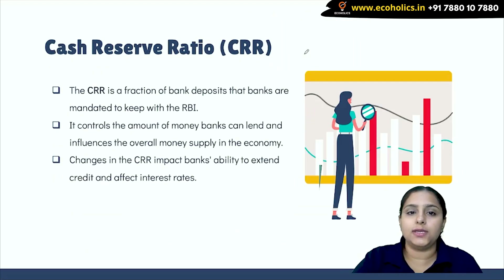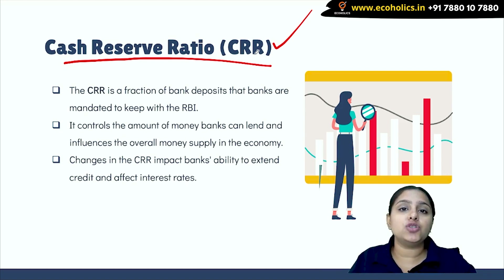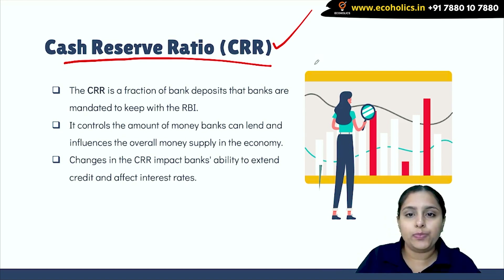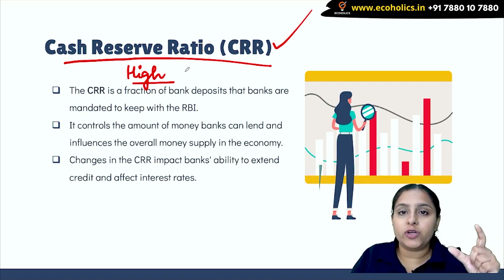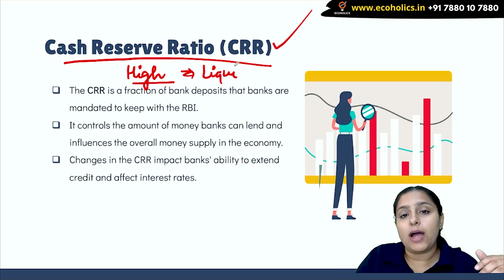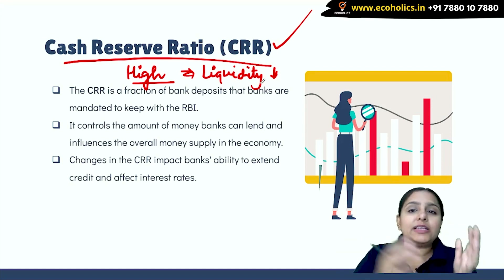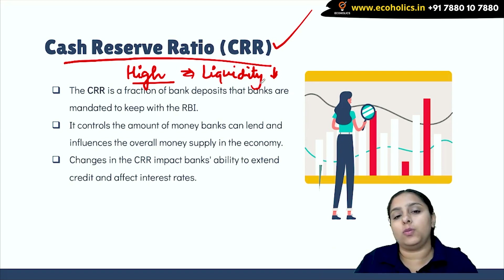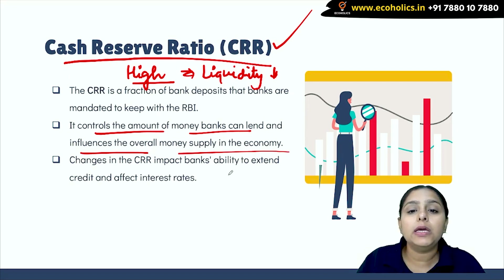Cash Reserve Ratio (CRR) is a very important tool. CRR determines what percentage of deposits a commercial bank must keep with RBI. If the CRR is high, commercial banks have to increase the percentage of deposits they give to RBI, so their liquidity decreases. High CRR means a fall in liquidity, which slows down the credit creation process, and the monetary base of the economy also falls. It controls the amount of money banks can lend and influences the overall money supply.